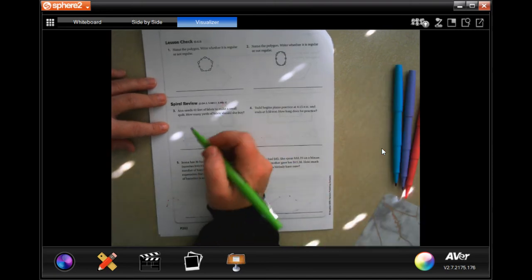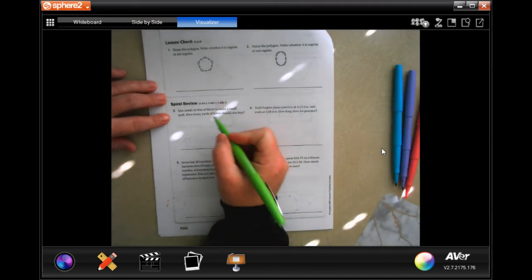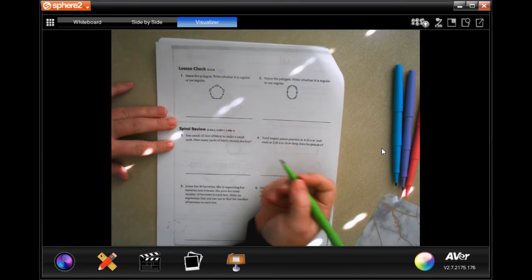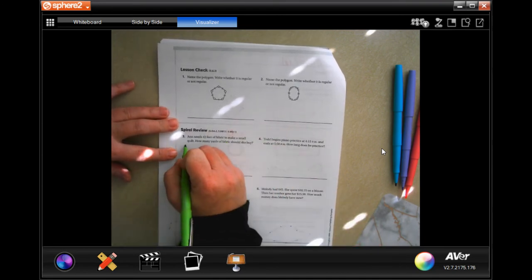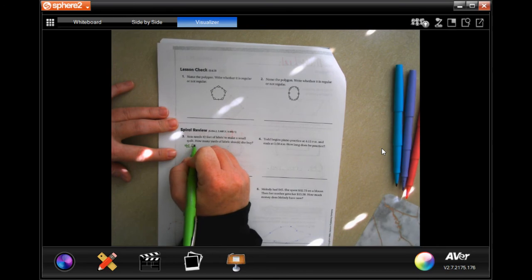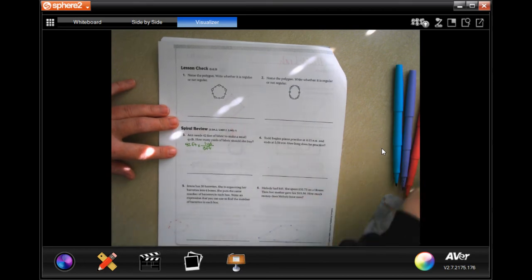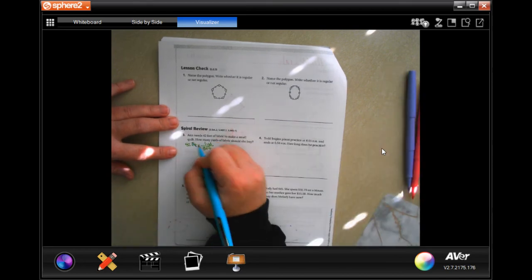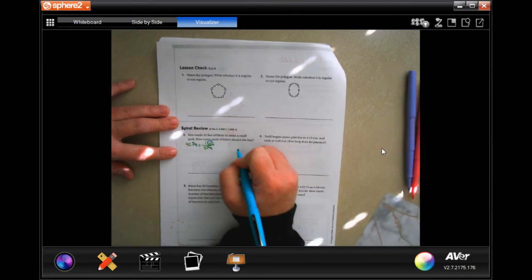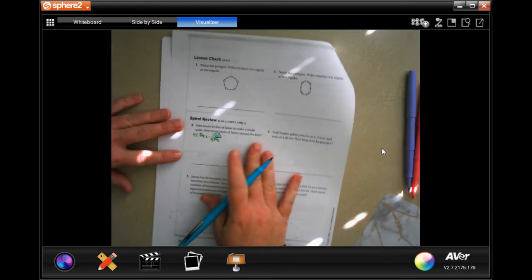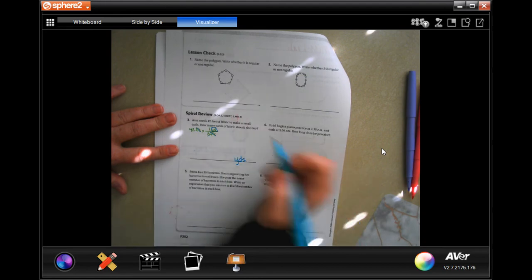We're going to go down to this power review. It says Anne needs 42 feet of fabric to make small quilts. How many yards of fabric should she buy? So 42 feet when there are three feet in one yard. So now we're going to cross cancel feet, we wind up in yards - that's what we want. And it looks like we have to divide 42 by three.